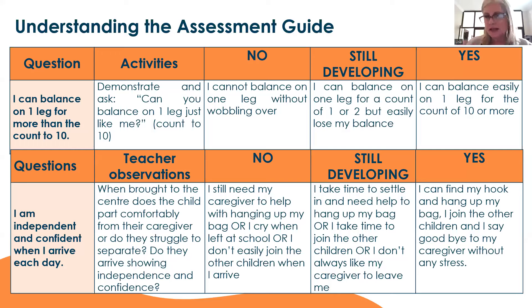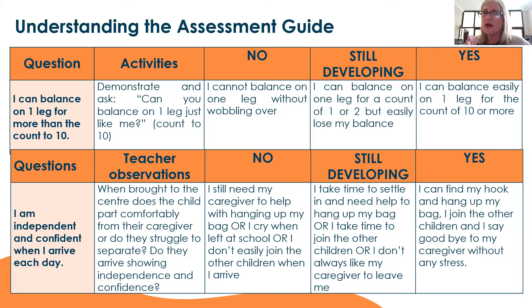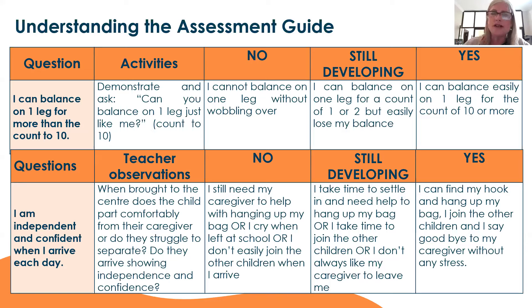The first is an activity, which means the teacher will prepare for it and do it as if it was just a fun activity in the classroom — for example, 'can you balance on one leg just like me?' There is a no, a still developing, or a yes, so you can assess very carefully which score to give the child. But then there's another type, which is more like an observation — for example, 'I am independent and confident when I arrive each day.' That's not based on one day; that's an overview that a teacher needs to have in an observation book, like whether a child cries every single day.